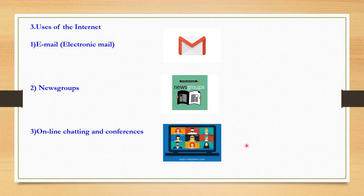Next is online chatting and conferences. Internet users across the world can communicate live with one another. Initially users could exchange only text messages, but now it is possible to send voice, images, and sound — similar to WhatsApp video calls. Online conferencing means meetings. There are special softwares for audio-video conferences on the internet. As we know, nowadays we use the Zoom application for online lectures, which is nothing but online chatting and meeting.